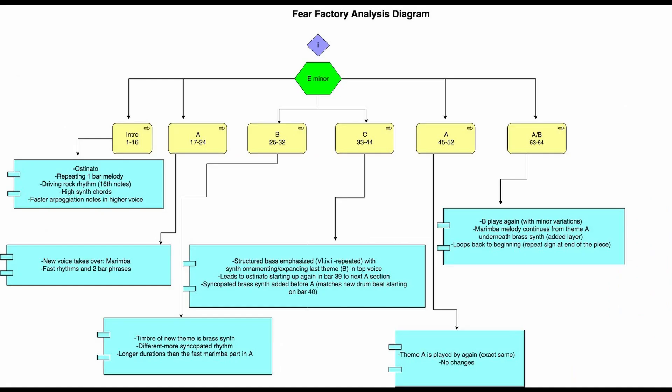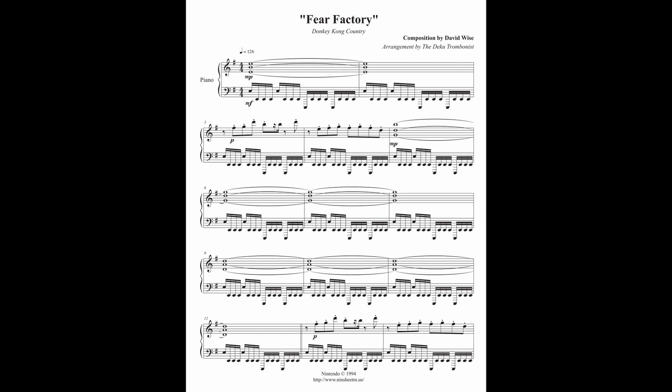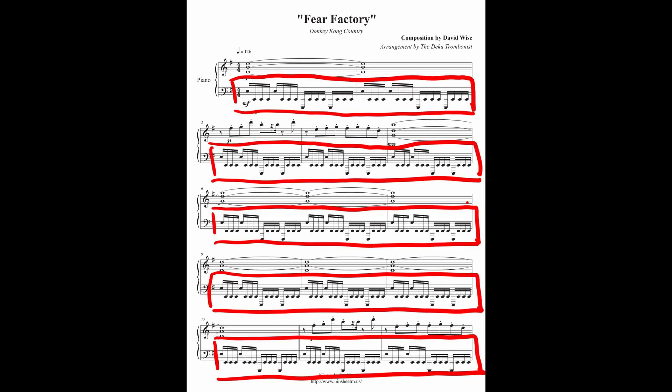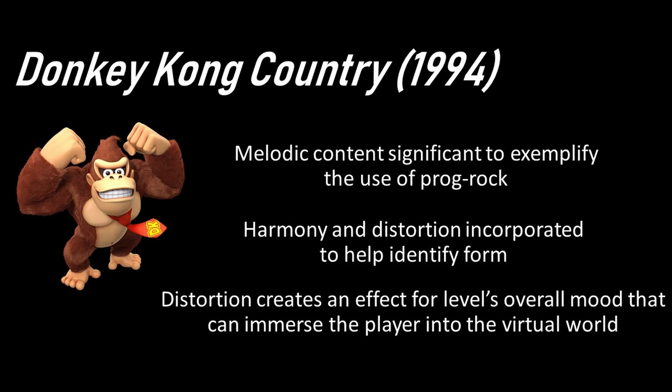We see the use of distortion and unconventional sounds in Fear Factory, with metal percussive echoes in the background and a strange synth timbre as well. This can be seen predominantly in the intro, bars 1 to 16, where fragments of percussion and synth drone are played. Melodic content is significant to exemplify the use of prog rock, and harmony and distortion are incorporated to help identify the form in the piece.